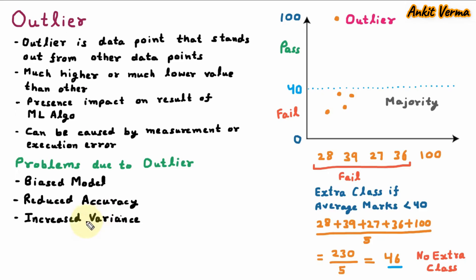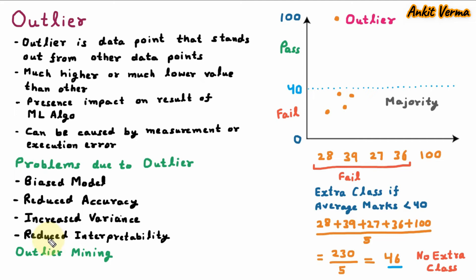Next problem is reduced interpretability — it is not able to interpret the exact results. So these are the problems that arise due to presence of outlier. In outlier, there is a term named outlier mining, which means analysis of outlier. When we analyze the outlier and check its value, this is called outlier analysis or outlier mining.